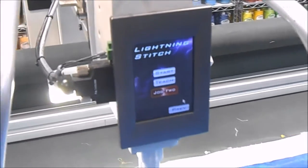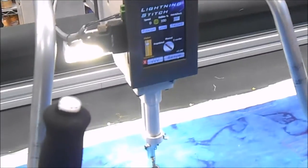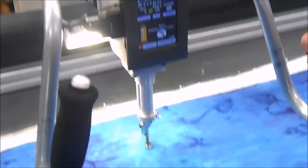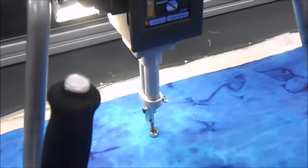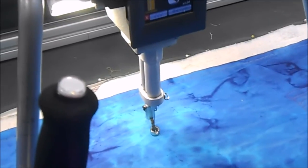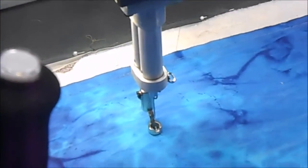The reason Lightning Stitch is so accurate is it is controlled by a digitally controlled servo motor in the back. The motor can go from 0 to 600 RPMs in 1 tenth of a second. So let's see how it sews for a minute here.